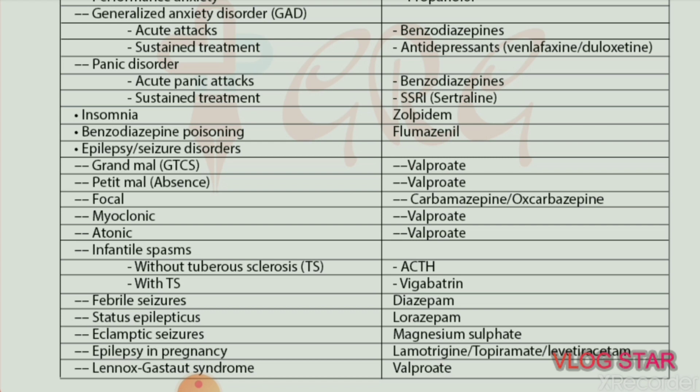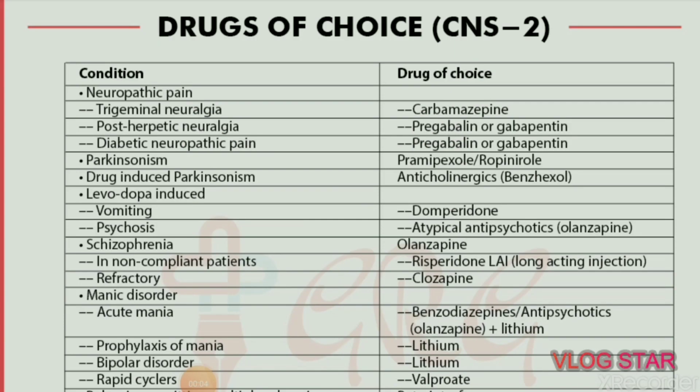Lennox-Gastaut syndrome — drug of choice is valproate. Lennox-Gastaut syndrome (LGS) is a complex, rare, and severe childhood-onset epilepsy. It is characterized by multiple concurrent seizure types, cognitive dysfunction, and slow spike waves on EEG (electroencephalogram).